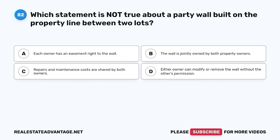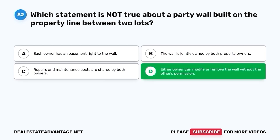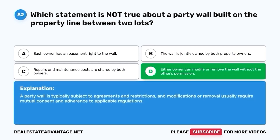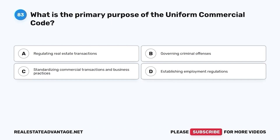Question 82. Which statement is not true about a party wall built on the property line between two lots? A. Each owner has an easement right to the wall. B. The wall is jointly owned by both property owners. C. Repairs and maintenance costs are shared by both owners. D. Either owner can modify or remove the wall without the other's permission. The correct answer is D. A party wall is typically subject to agreements and restrictions, and modifications or removal usually require mutual consent and adherence to applicable regulations.